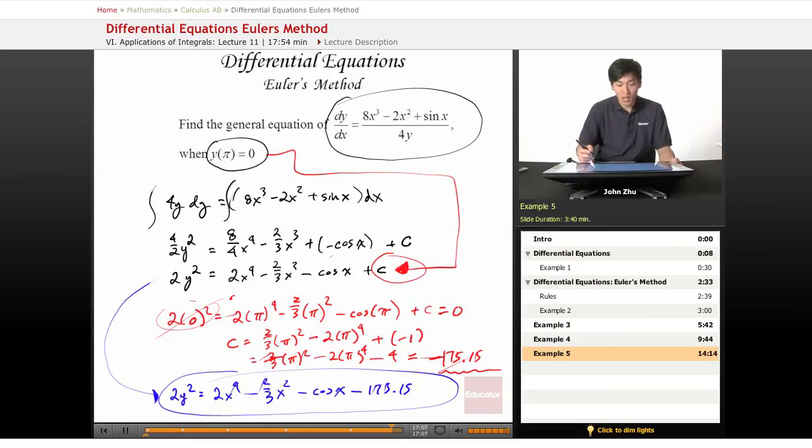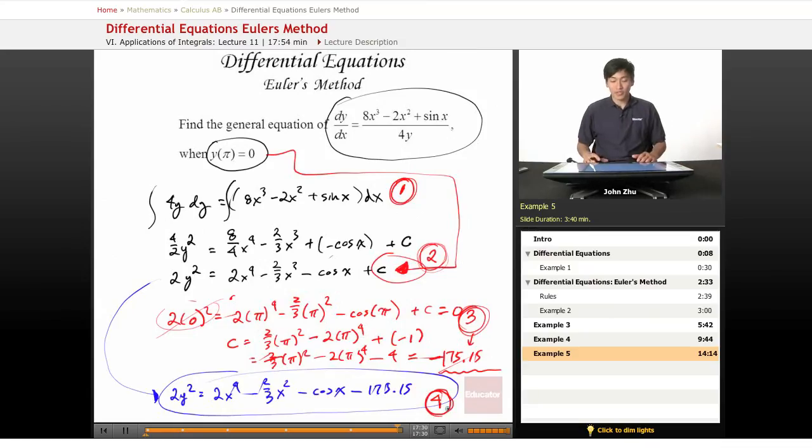Let's recap the steps. First, we separated the variables and took the integral. Second, we applied the initial condition to find the constant c. And then finally, we just plugged the c back in and wrote down the general equation of the differential equation.